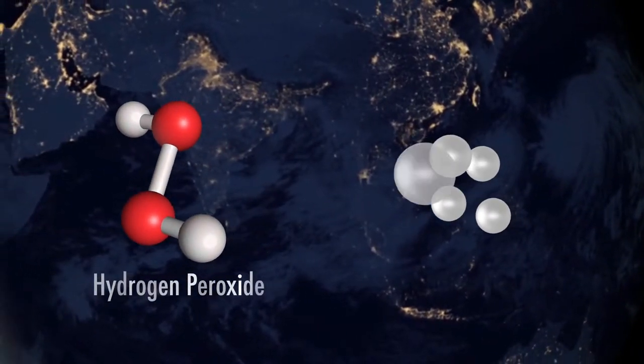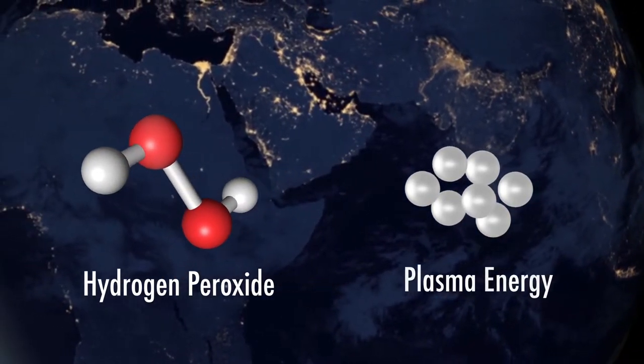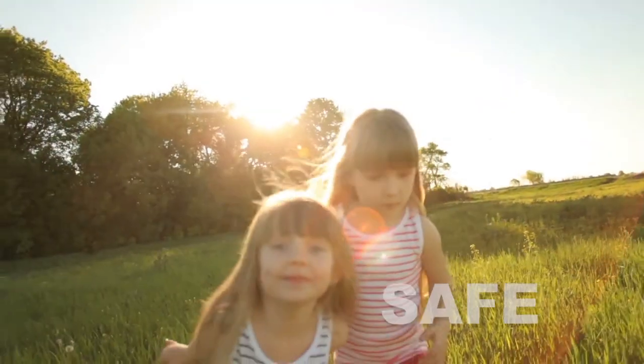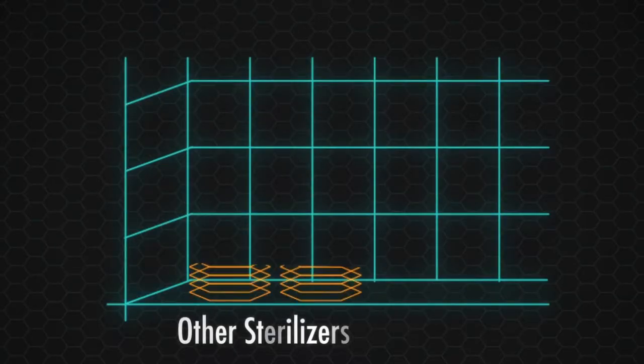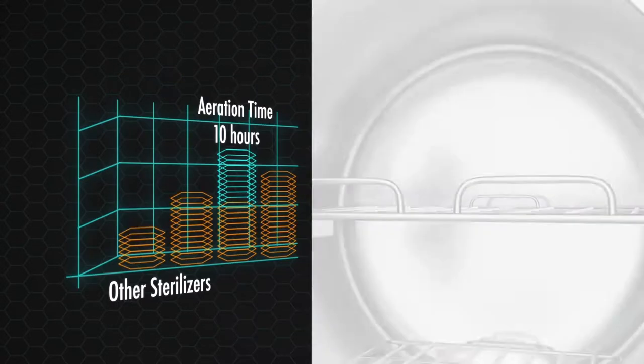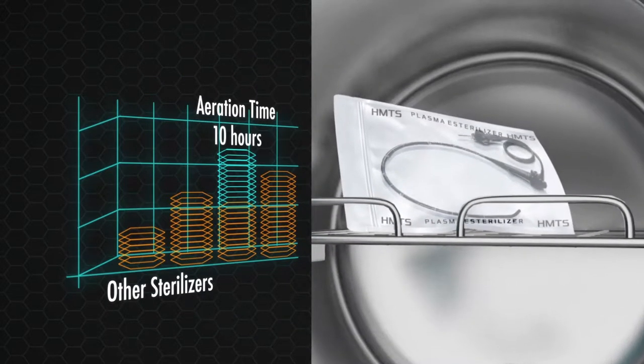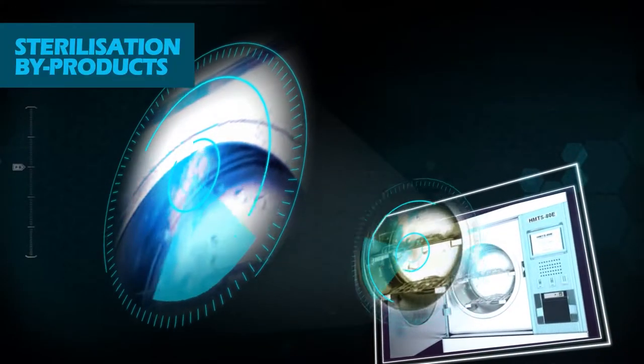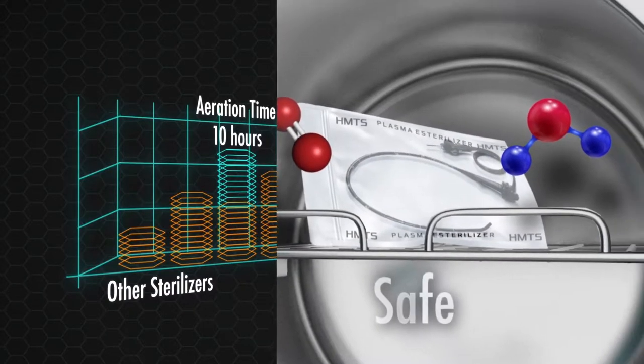The HMTS series meets the strict environmental standards of the world by utilizing the sterilization properties of hydrogen peroxide and plasma energy, which eliminates the problem of exhaust gas. Due to the CFC gas of previous sterilizers, residue toxins would take 10 hours alone to aerate for the protection of users. However, with the HMTS series, the final byproducts are only oxygen and water, making the sterilization process safe and reliable.